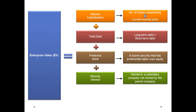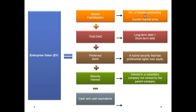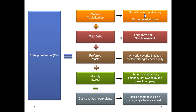Finally, this is the value we need to pay to acquire or invest in the assets of a firm. Assets include cash and cash equivalents such as marketable securities and short-term investments, which technically reduce the acquiring cost. That is why we deduct cash and cash equivalents to arrive at enterprise value. In a nutshell, enterprise value is the total economic value of a firm at a given point of time.